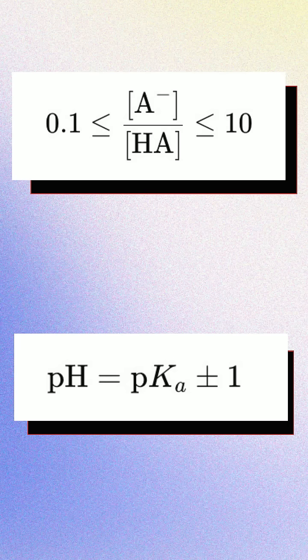It just can't resist pH changes as well anymore. So, ideally, to keep your buffer most effective, you want the concentration ratio to stay close to 1 to 1.